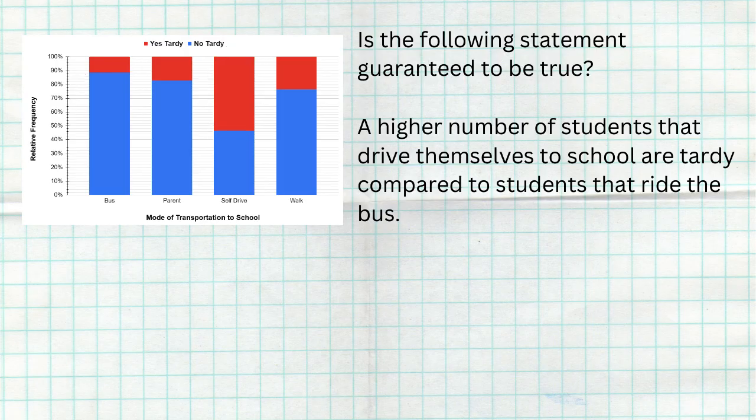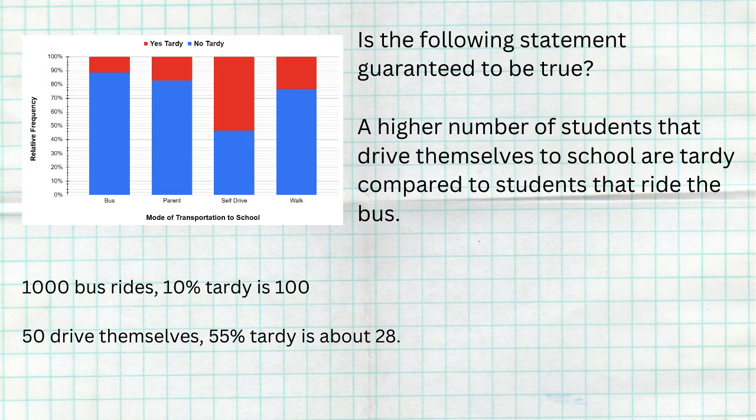Just because a proportion from one group is higher doesn't mean the number of people in that group is higher, because we don't know the sample sizes. If 1,000 kids ride the bus and 10% are tardy, that's about 100 kids. But if only 50 kids drive themselves and 55% are tardy, that's about 28 kids — so the statement would actually be wrong. There is a higher proportion, but not a higher number. Be very careful when comparing proportions without knowing the size of the groups.